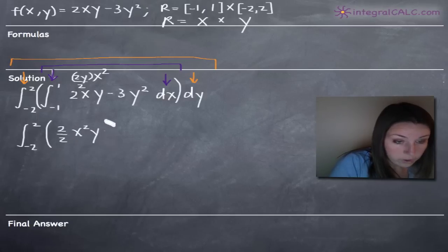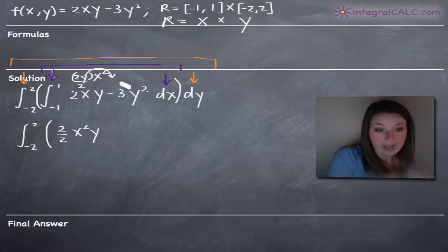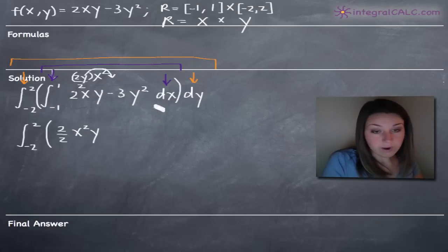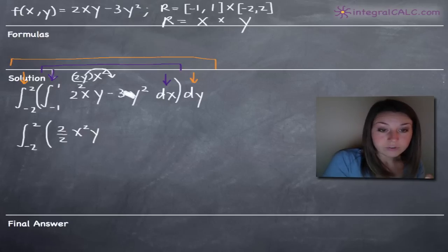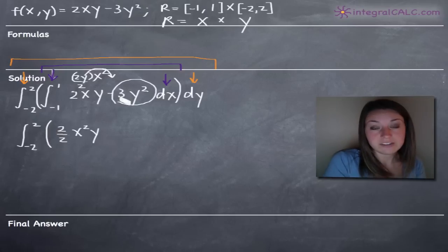We move the y to the end because we want variables in alphabetical order. To integrate negative 3y squared, we realize that x is the variable we're dealing with, and we're holding y constant. So y is a number, which means this whole term, negative 3y squared, is a constant, as if we're saying minus 4. That whole thing is a constant with no x variable involved.